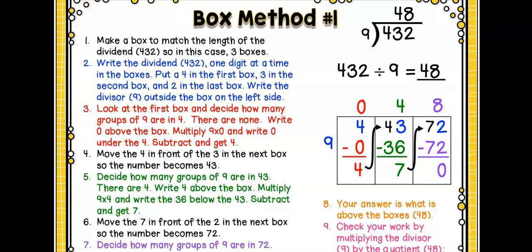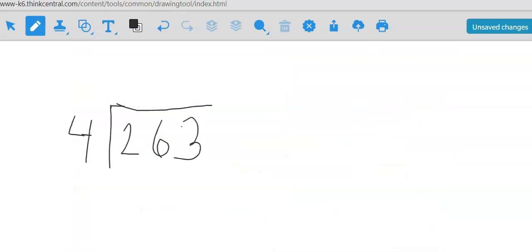Then you need to decide how many groups of 9 are in 72. Well, there is 8. So, then you're going to take the 8, multiply it by the 9, put the 72 here. You're going to subtract 72 from 72, and get 0. So, your answer would be 48. So, that is the box method. Okay kiddos, so let's do another.